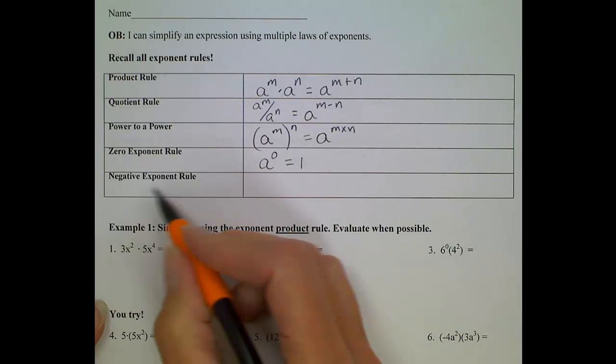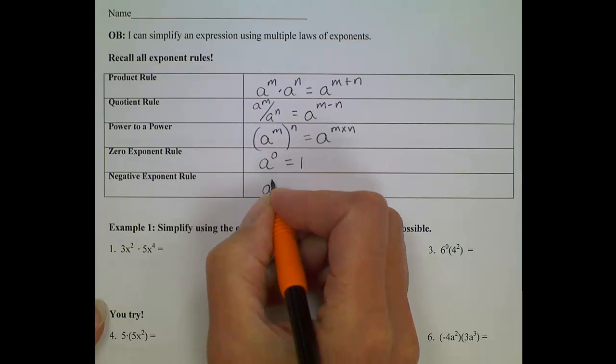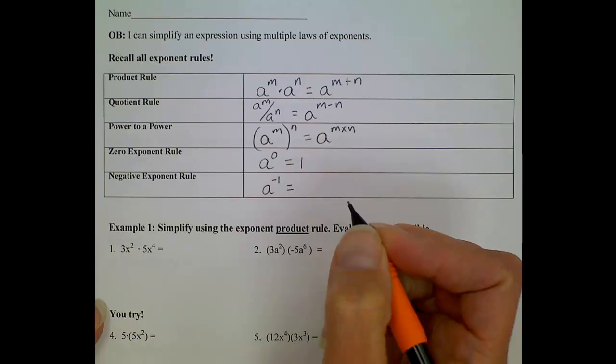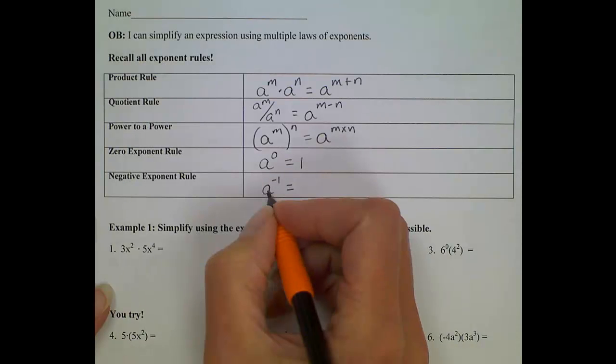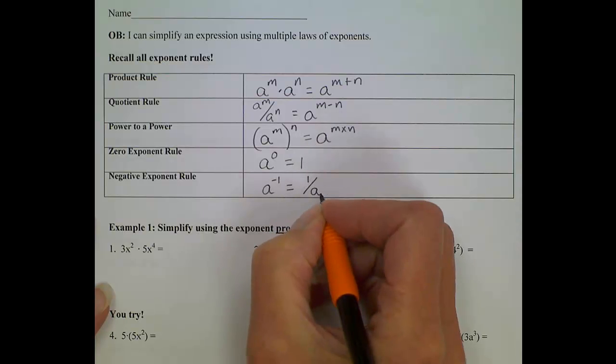Also, the negative exponent rule sometimes gets a little confusing. If you have a number raised to a negative exponent, what we're doing is taking an inverse of that number. So a to the negative 1 turns it into a fraction, and it becomes 1 over a.